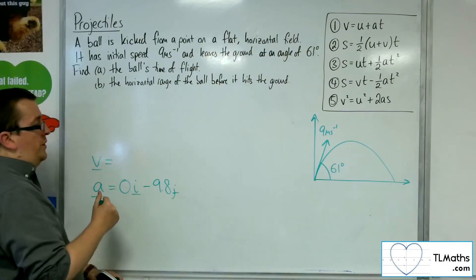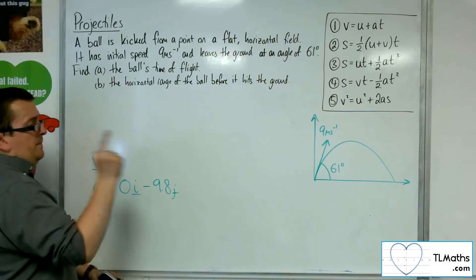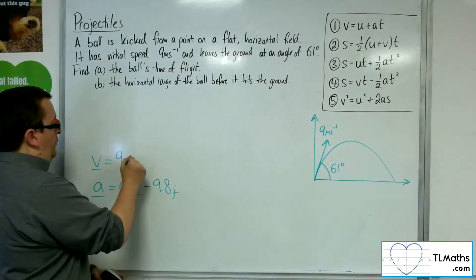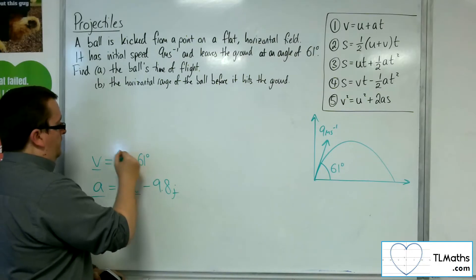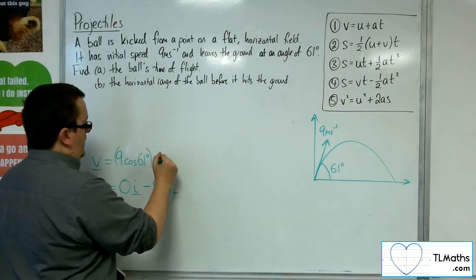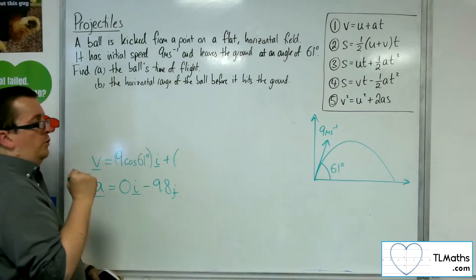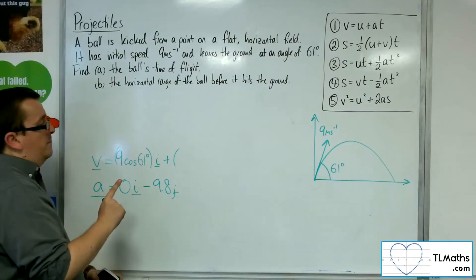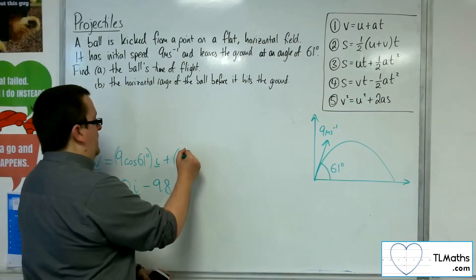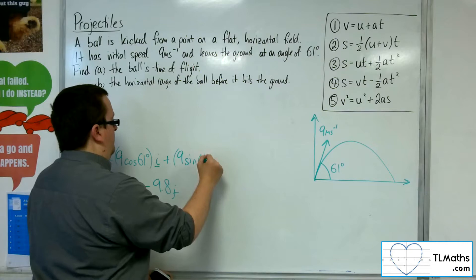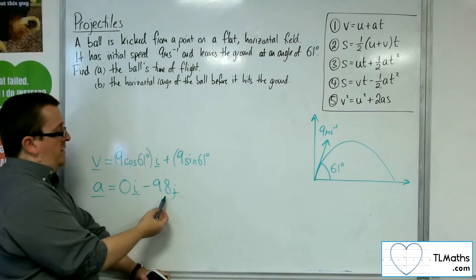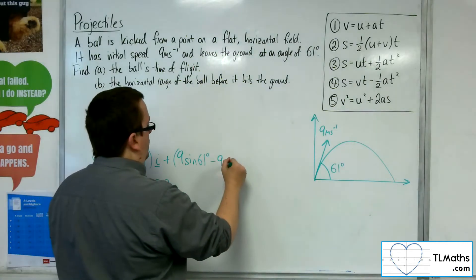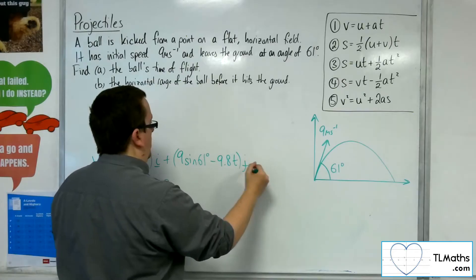Introducing the initial conditions for the velocity, which is 9 cosine 61i, and then the initial velocity in the y component, in the vertical component, is 9 sine 61. And don't forget, we're integrating the minus 9.8, so we get minus 9.8tj.